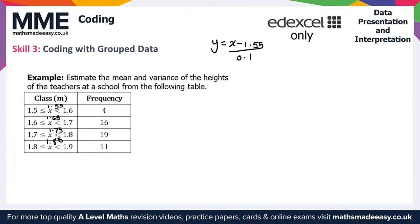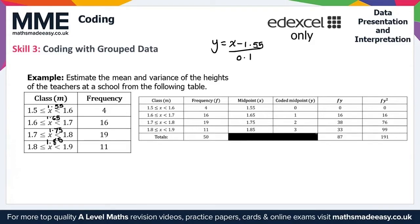Adding the coded midpoints to the table, we also calculate fy (frequency times coded midpoint) and fy² (frequency times coded midpoint squared). For example, 4×0=0, 16×1=16, 19×2=38, 11×3=33 for the fy values. For fy²: 4×0²=0, 16×1²=16, and so on.